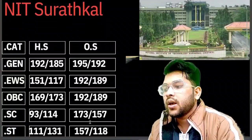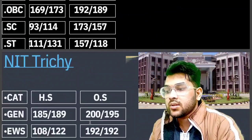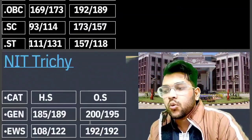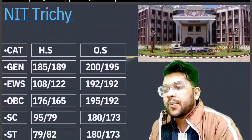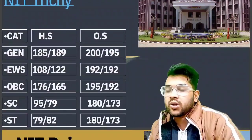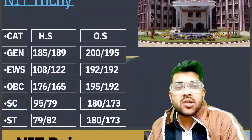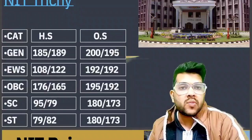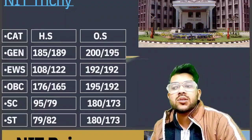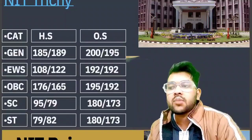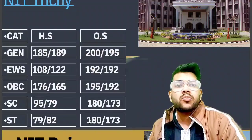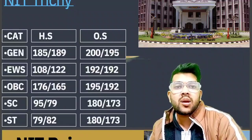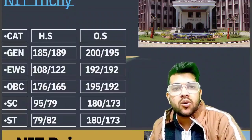For NIT Surathkal: General 195, EWS 192, OBC 192, SC 173, ST 157 marks. For NIT Trichy, which is the number one NIT: General 200, EWS 192, OBC 195, SC 180, ST 180 marks. These marks are for the first attempt only. In the second attempt, you may need to score 5 to 10 marks more, as competition among students increases compared to the first attempt.